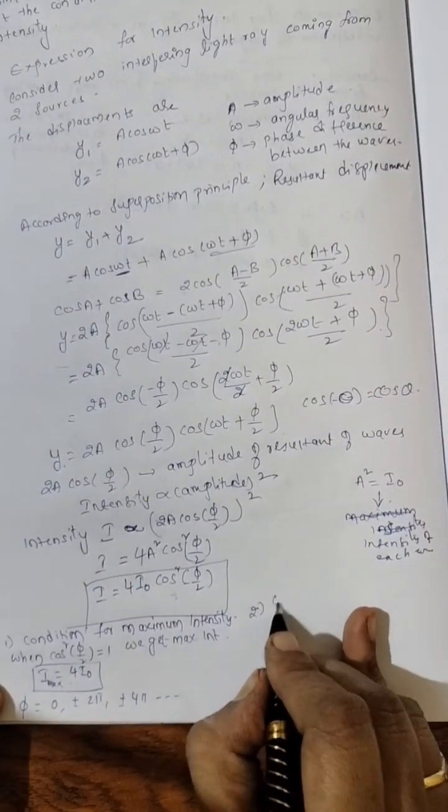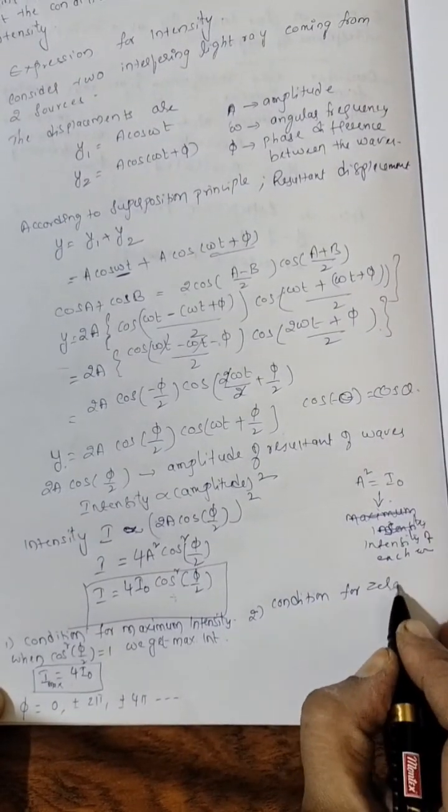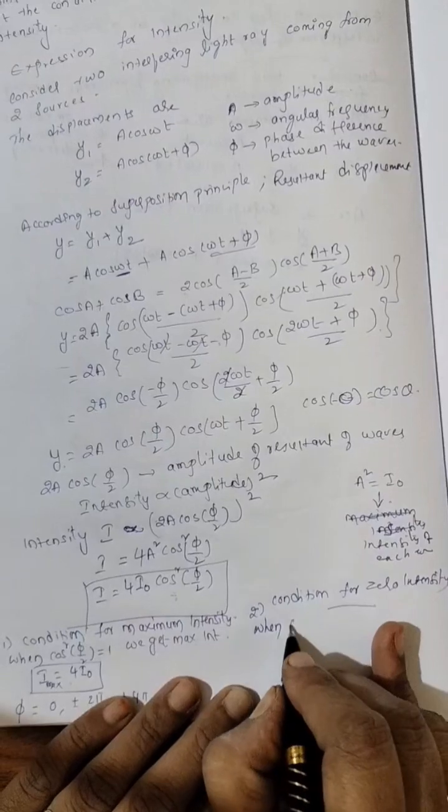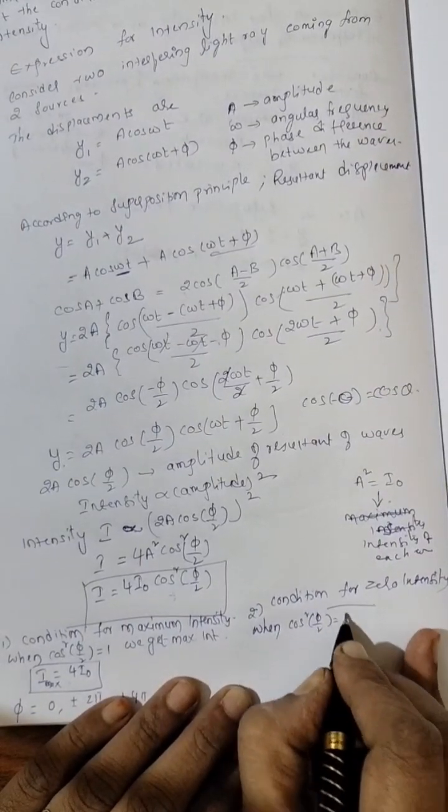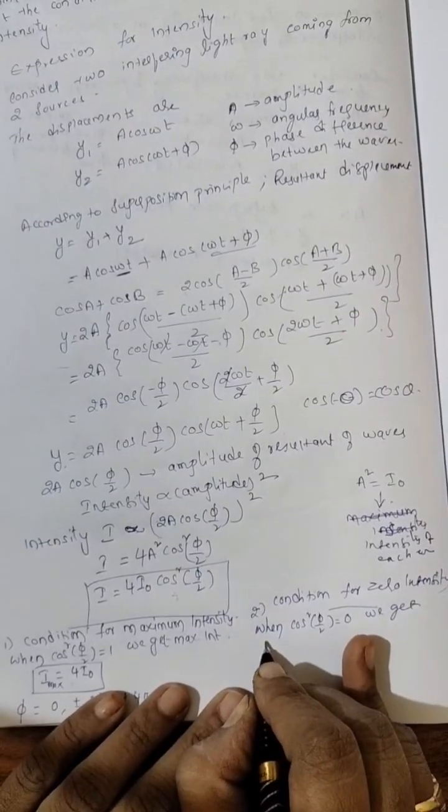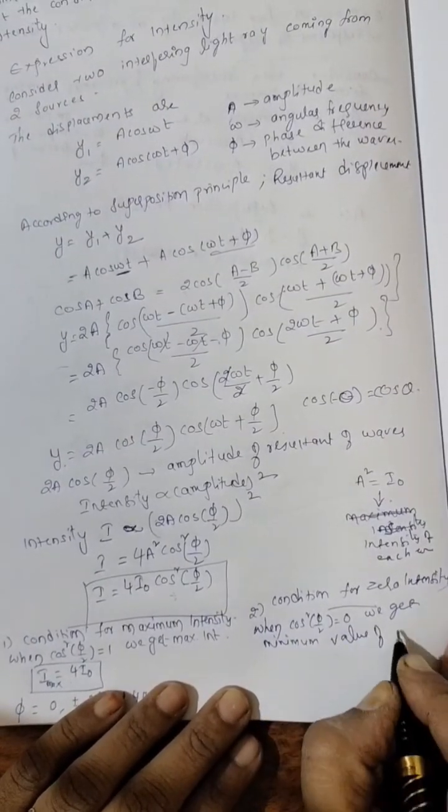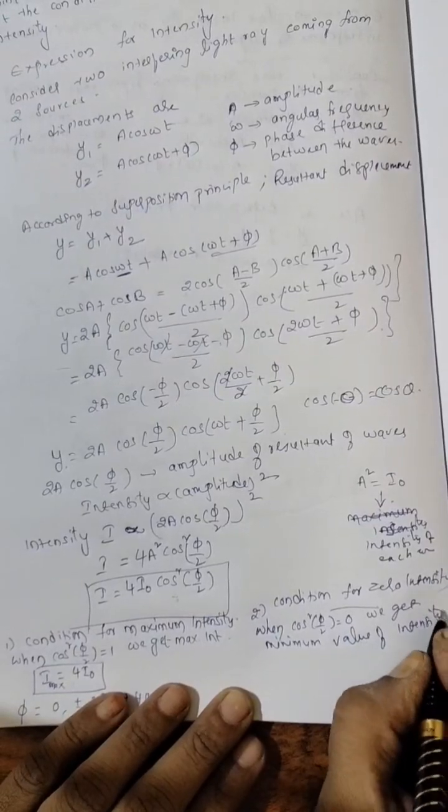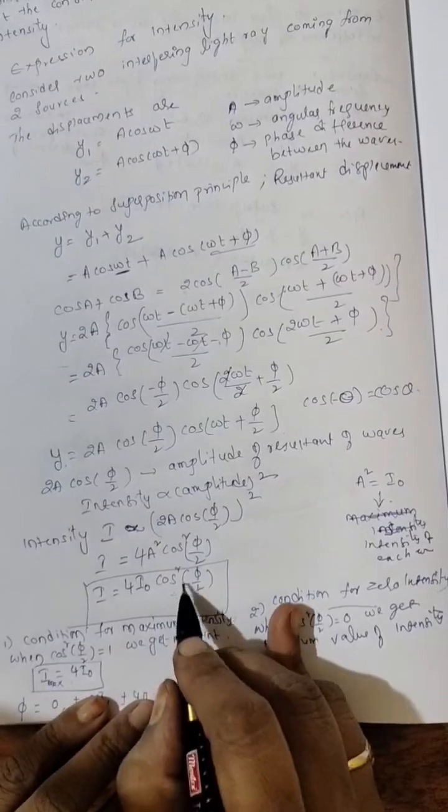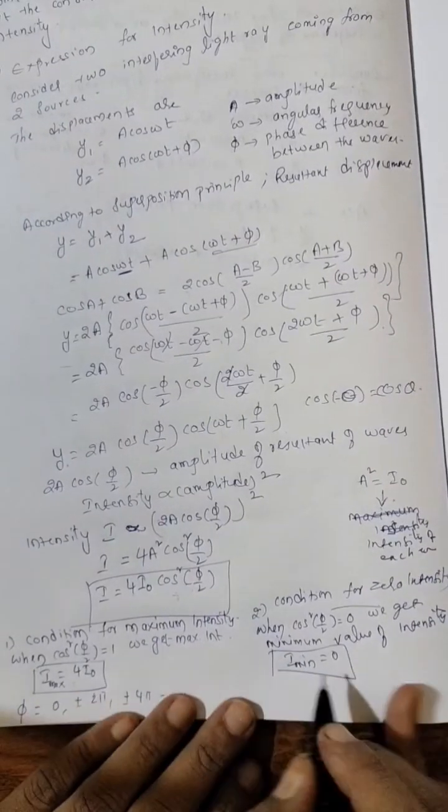Now next one, condition for zero intensity. So when we get zero intensity: when cos square phi by 2 is equal to zero, we get zero or minimum intensity. When we substitute zero at the cos square phi by 2, what will be the expression? Zero into something zero. I minimum is equal to zero. What is I maximum? 4 I naught. I minimum zero.